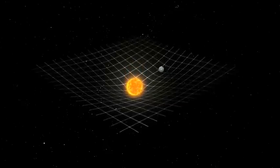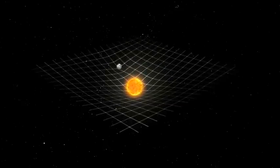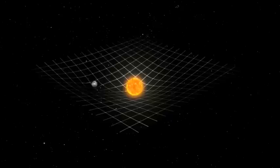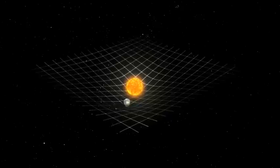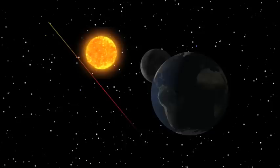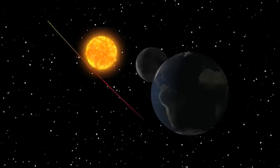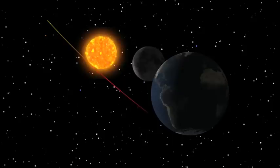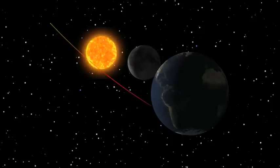We know mass distorts space. We know light is affected by gravity. And we know Einstein's theory of general relativity makes possible one of the strangest objects ever imagined by physicists.